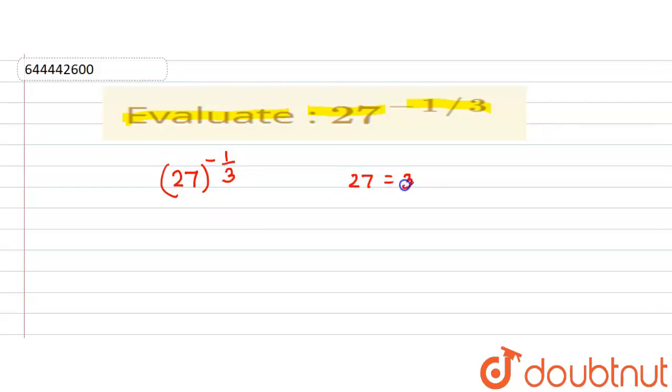as 3 into 3 into 3. If I take the LCM of it, I will get 3 into 3 into 3, so I can write this in form of 3 cube. So let us substitute the value of 27